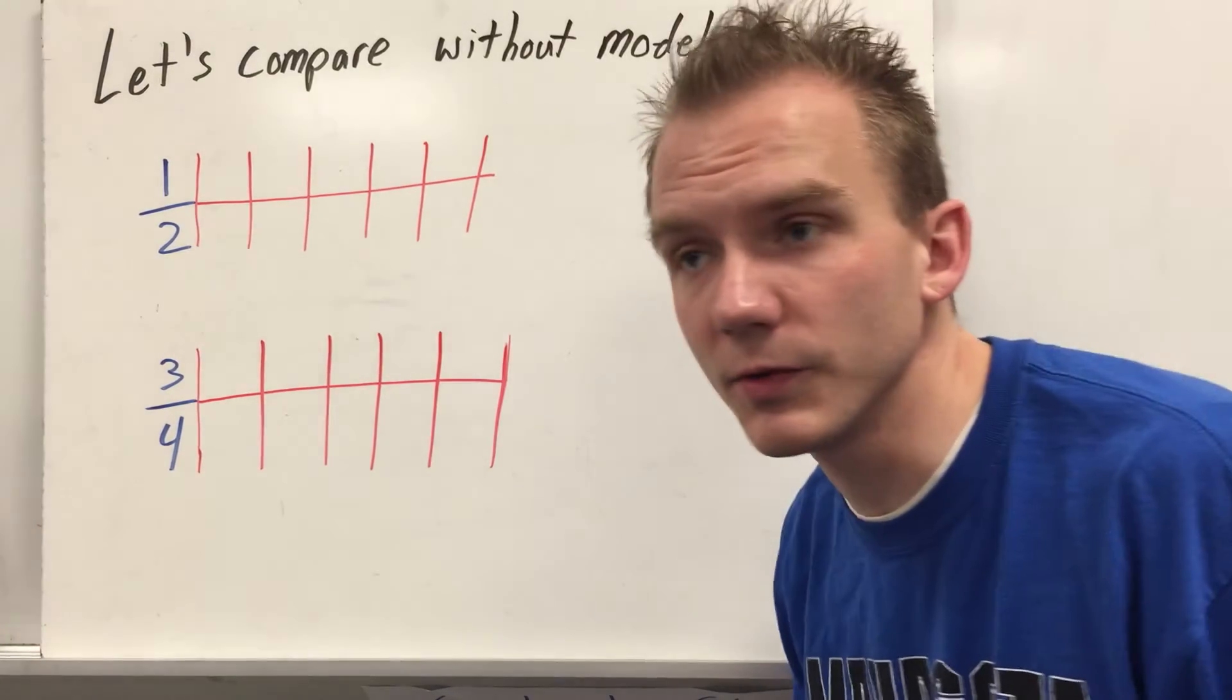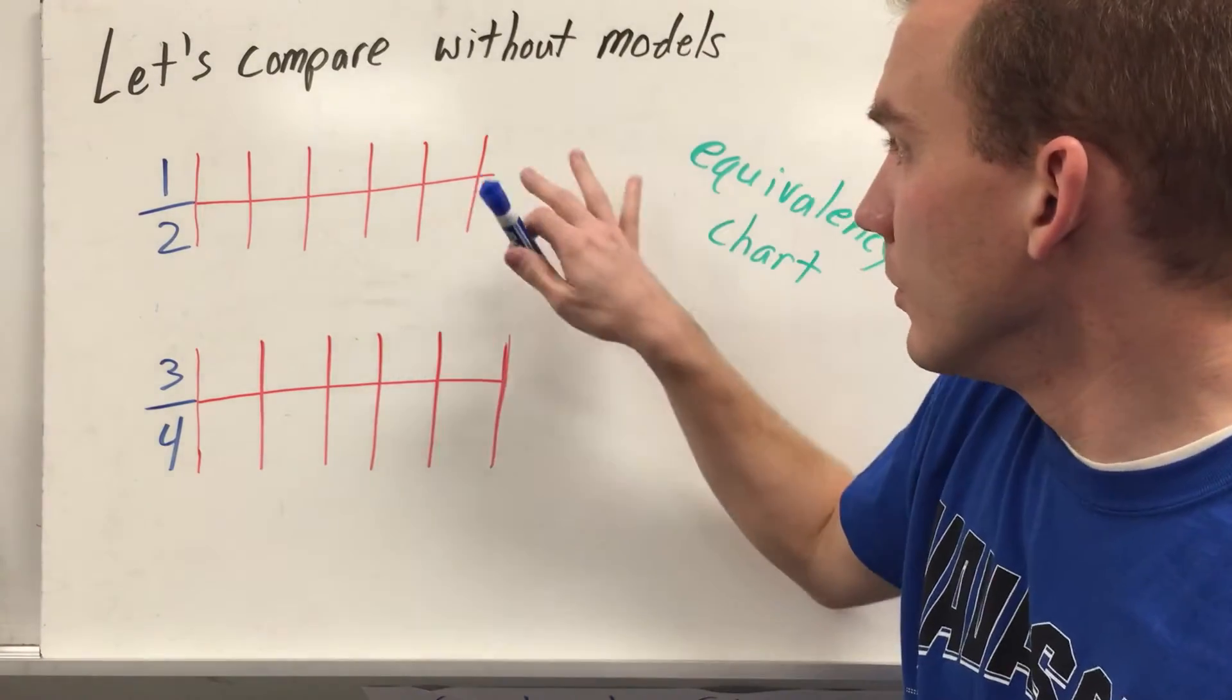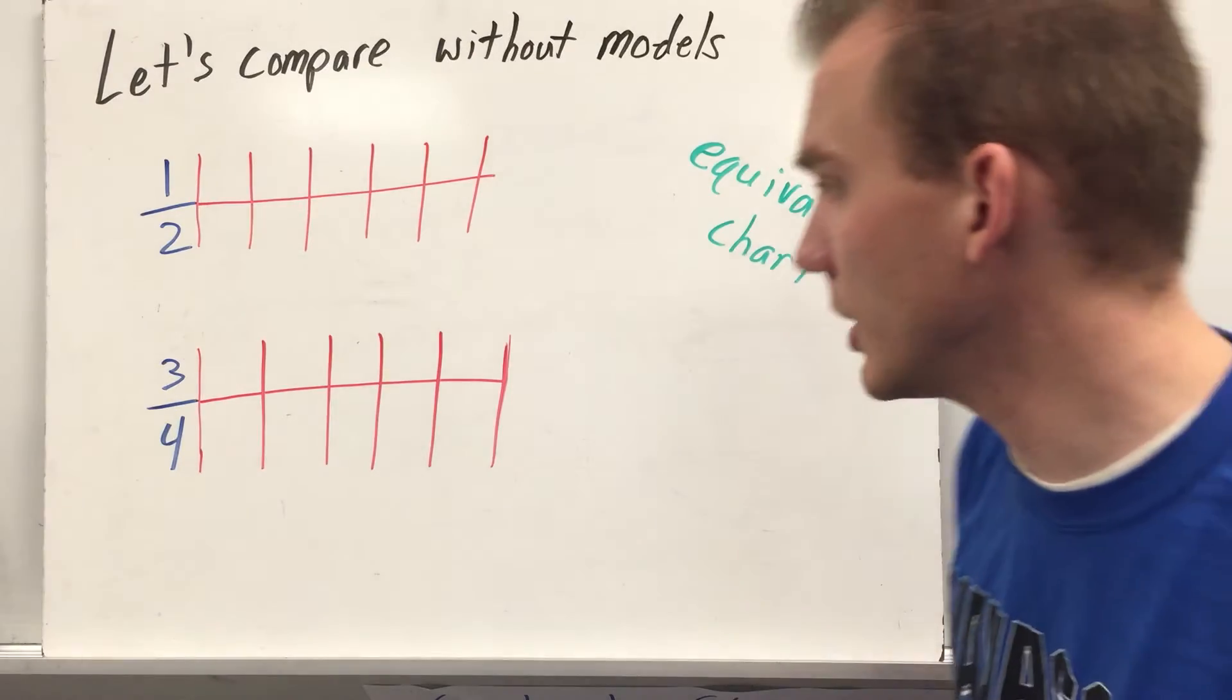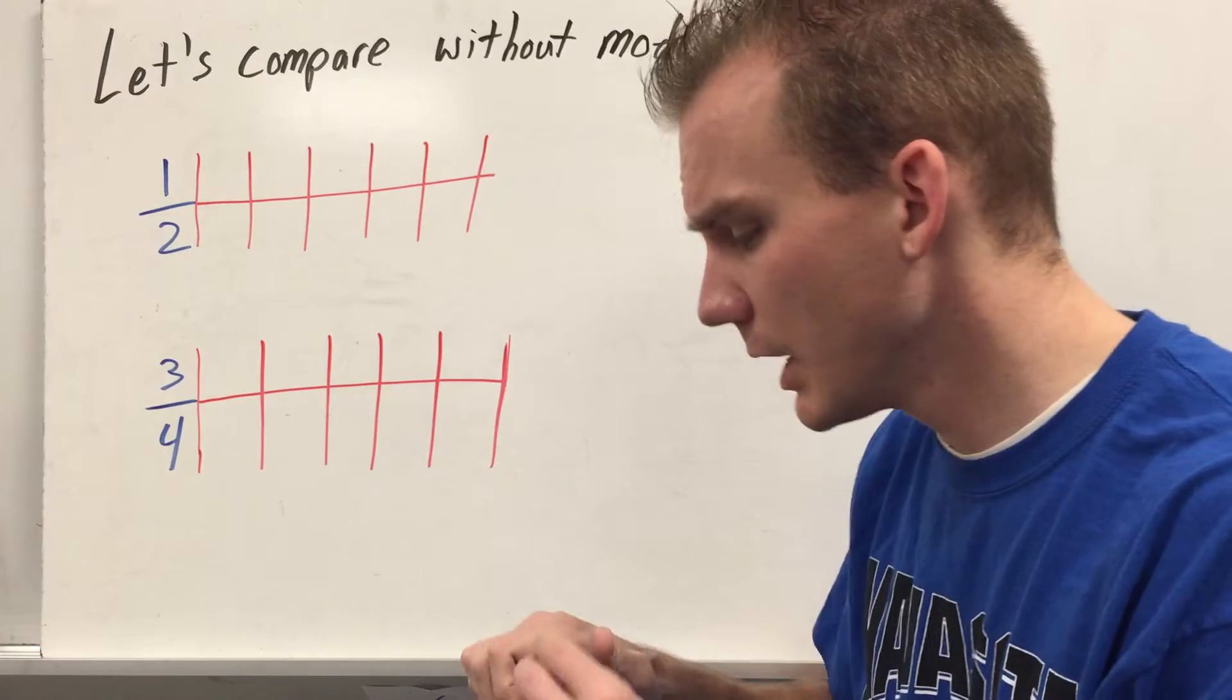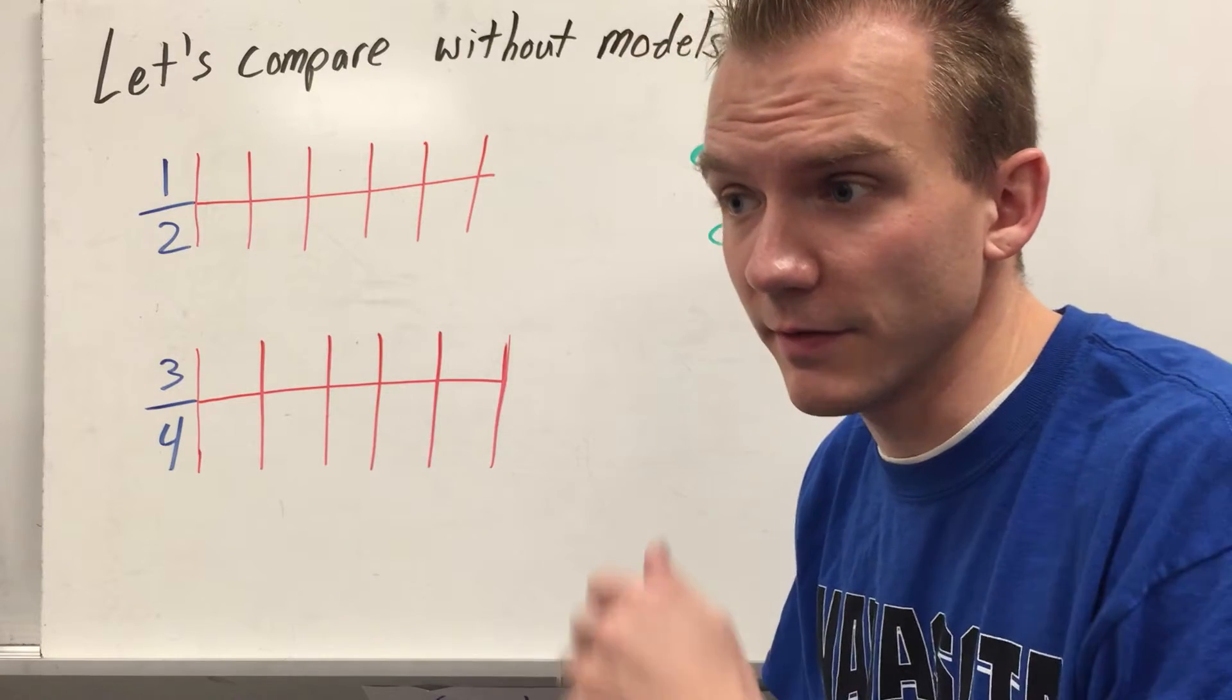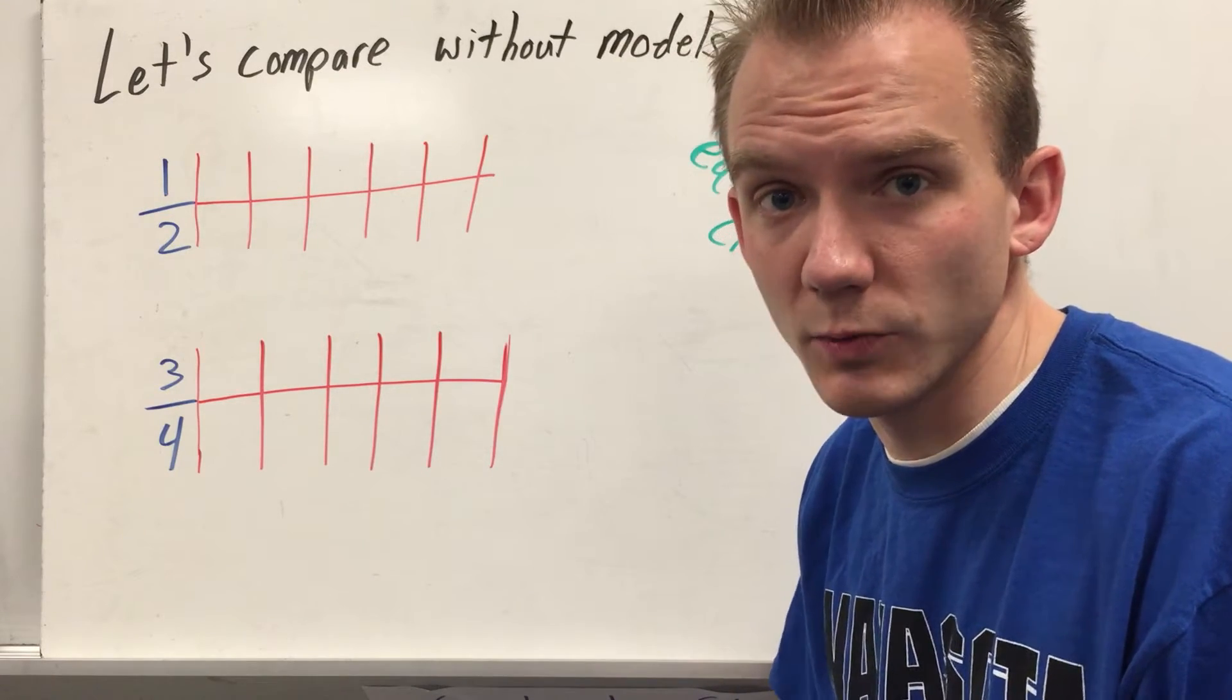Sometimes we don't have models or we're not able to draw accurate models. So we need to be able to compare without the models mathematically. How do you do that? Well, we're going to do something we call the equivalency chart that relates directly to multiplication facts for both your numerator and your denominator. All you need to do is just basically count by your numerator and denominator and you're going to create equivalent fractions. Then you're going to find two equivalent fractions that have the same denominator and compare their numerator to see which one is larger.